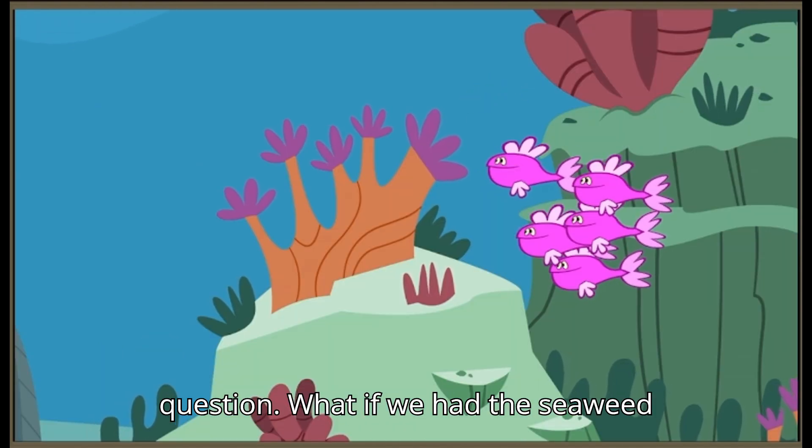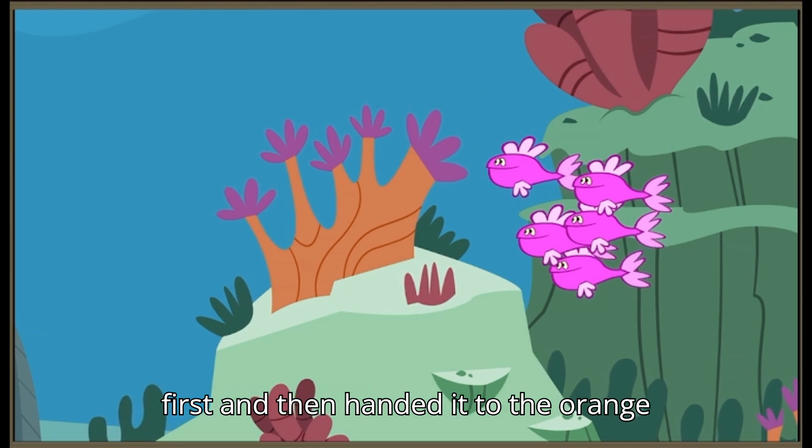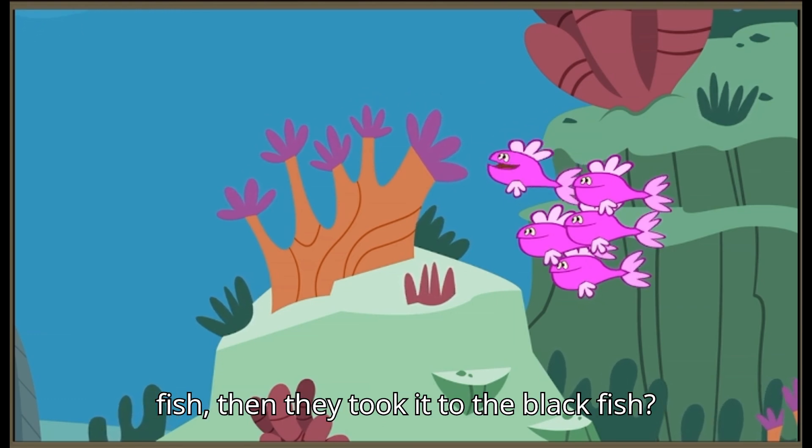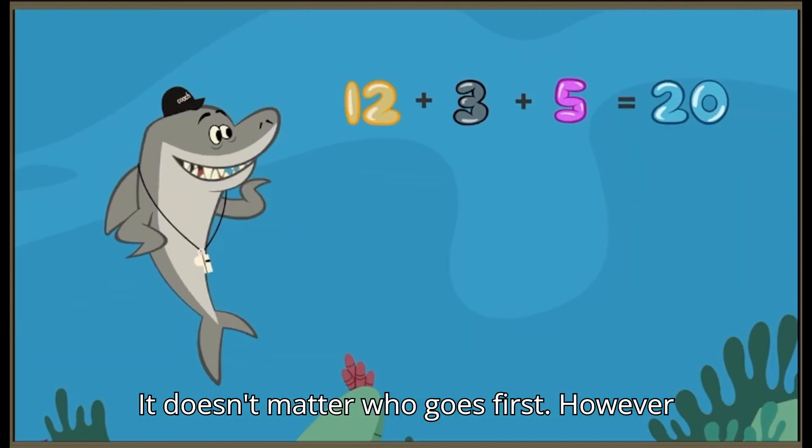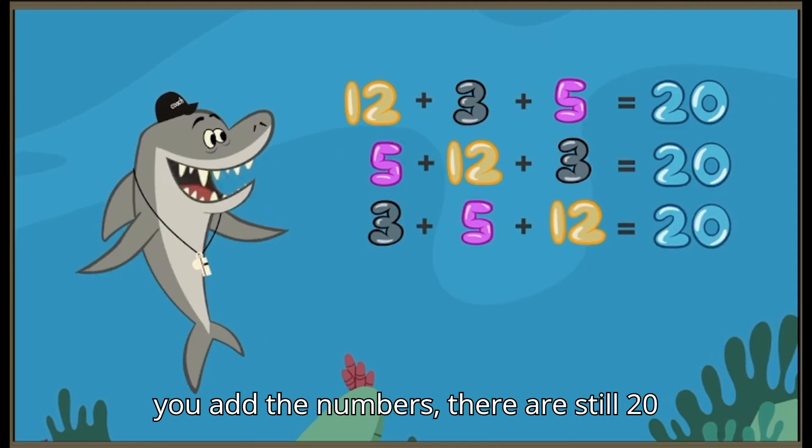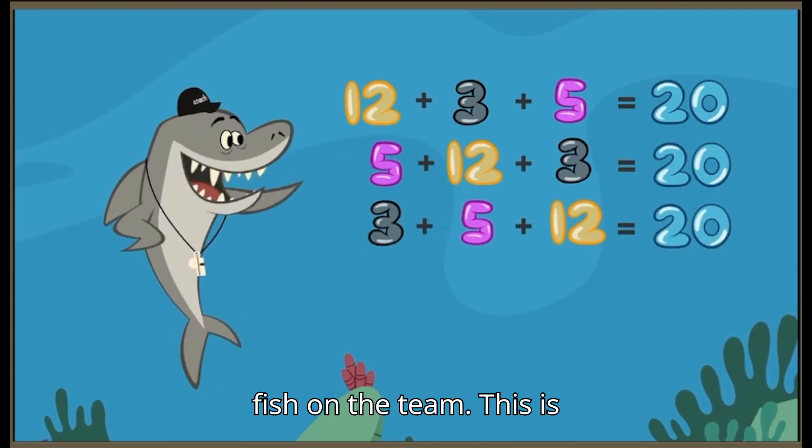Coach, I have a question. What if we had the seaweed first and then handed it to the orangefish, then they took it to the blackfish? Hey, I thought we got the seaweed first. It doesn't matter who goes first. However you add the numbers, there are still twenty fish on the team.